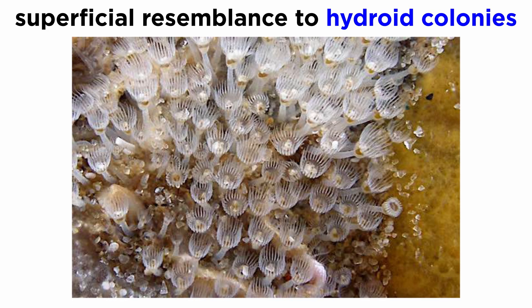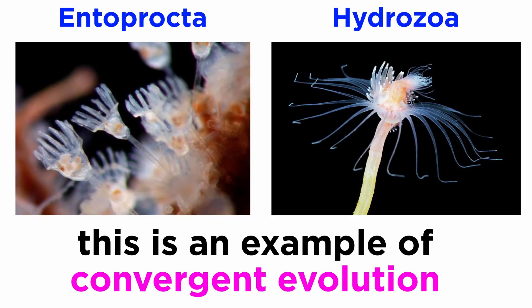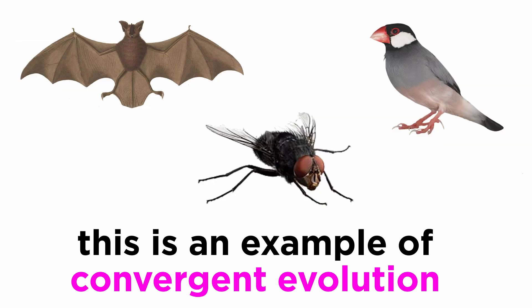They, like the bryozoans, superficially resemble hydroid colonies, though the phyla are not related. Their apparent resemblance to Hydrozoa is likely an example of convergent evolution, where two clades converge on a similar form that has arisen since common ancestry. It's kind of like how bats, birds, and bugs all fly, but they all developed flight after their evolutionary lineages diverged.